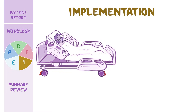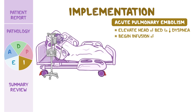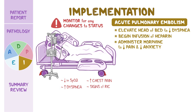Ms. Gutierrez returns from the CTPA, and the diagnosis of acute pulmonary embolism is confirmed. You elevate the head of the bed to reduce her dyspnea and begin an infusion of the anticoagulant heparin. You administer morphine, an opioid analgesic, to decrease her pain and anxiety. You continually monitor for any changes requiring immediate physician notification, such as a decrease in SpO2, increased dyspnea, increased chest pain, or signs of right heart failure.